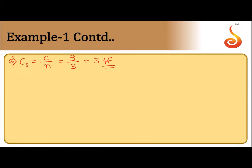So the effective capacitance is three picofarad. The combination is connected to a one kilovolt — that is, a thousand volt — supply. To calculate the charge on each capacitor: in a series combination, the charge on each capacitor is the same as that of the combination, so it should be Cs into V.